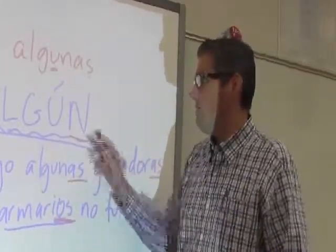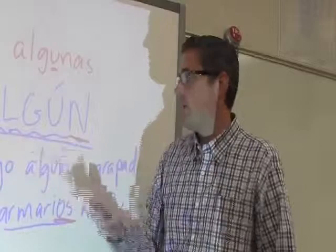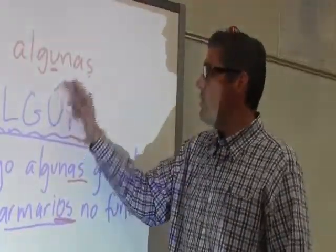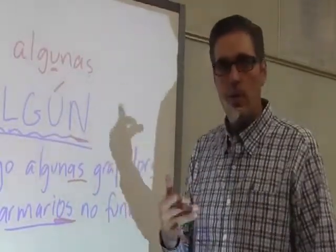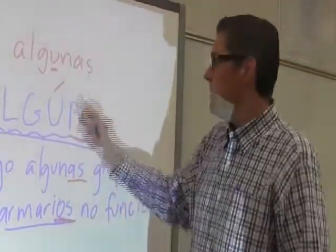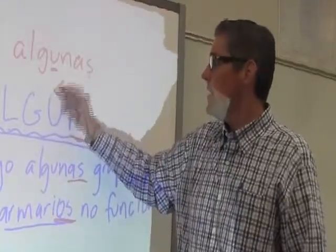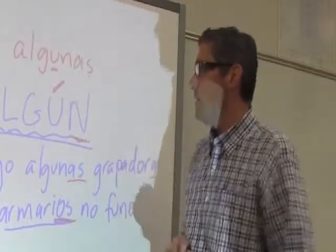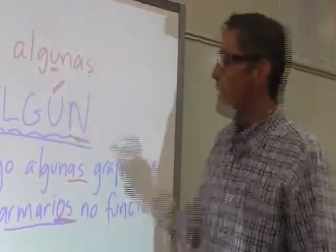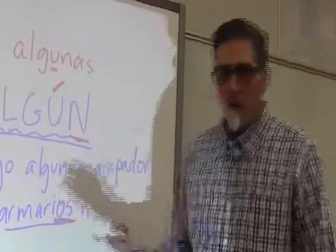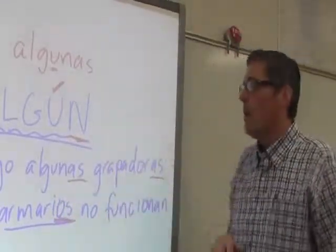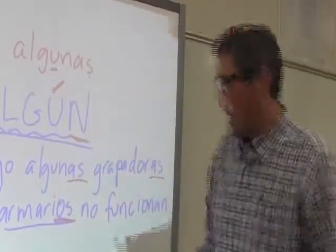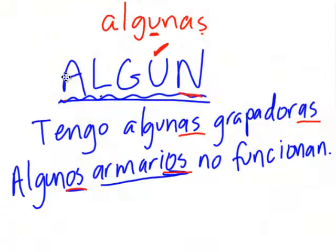In this case, algún ends in N, so the stress should be on the next-to-last syllable — which would be the A, al. But it's not — it's over the U. We say algún, not algún. Because it's breaking that rule, it's like when a teacher puts a check next to your name when you're misbehaving — we put a little accent mark to tell the reader we're breaking the rules: algún. So: algún with accent, algunas, algunos.